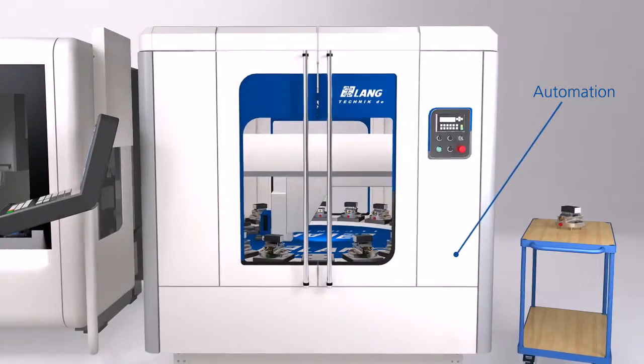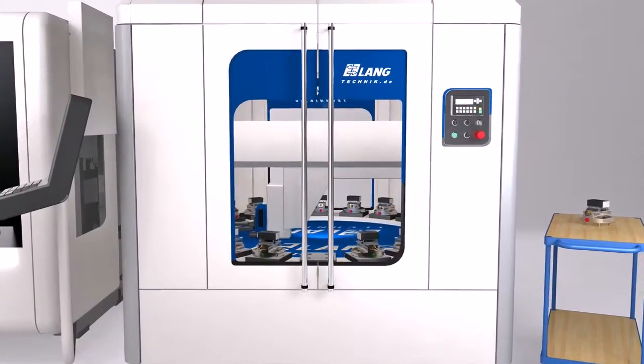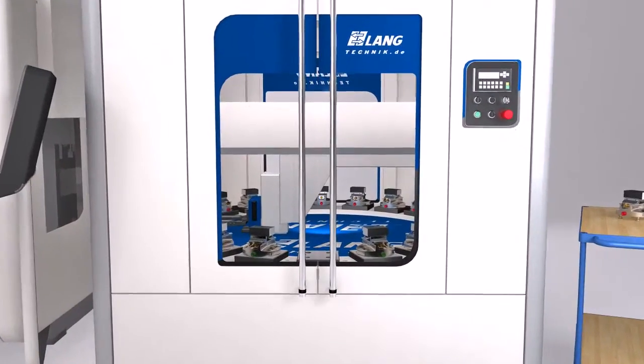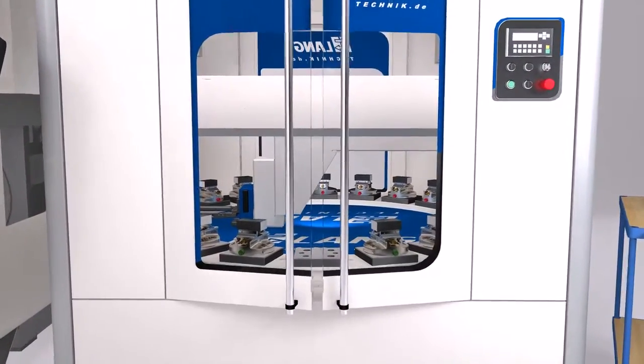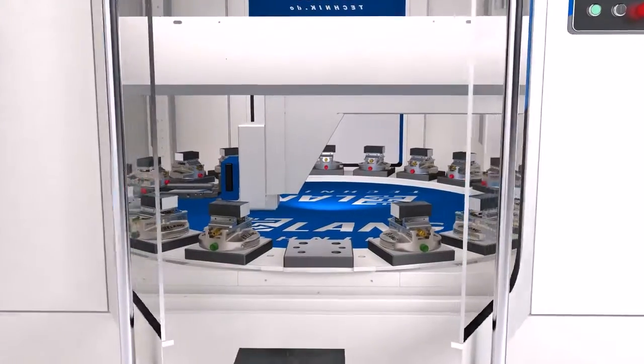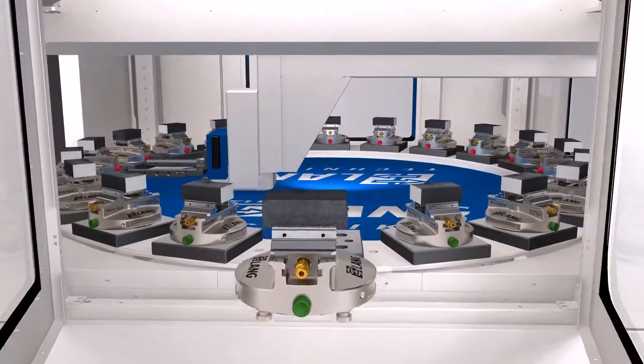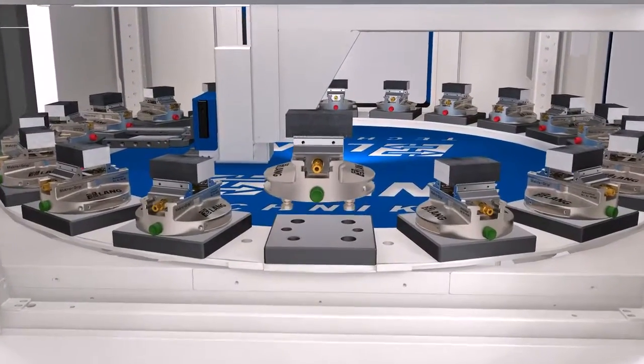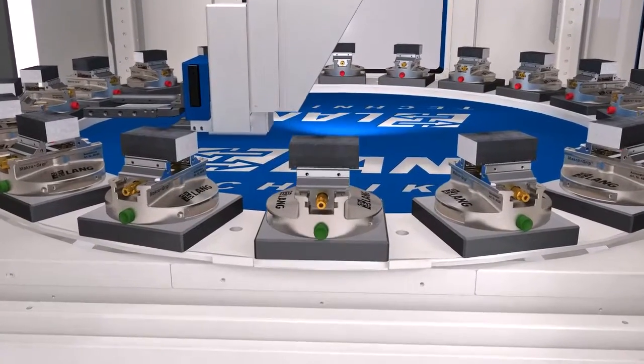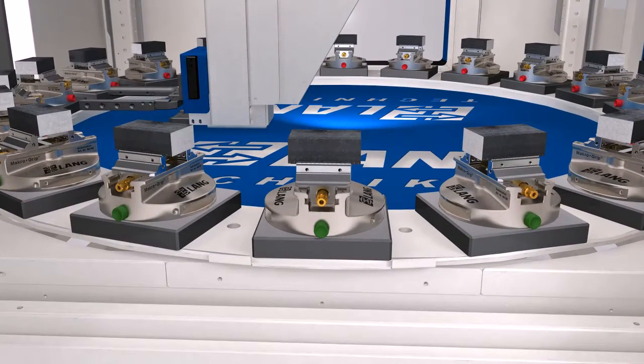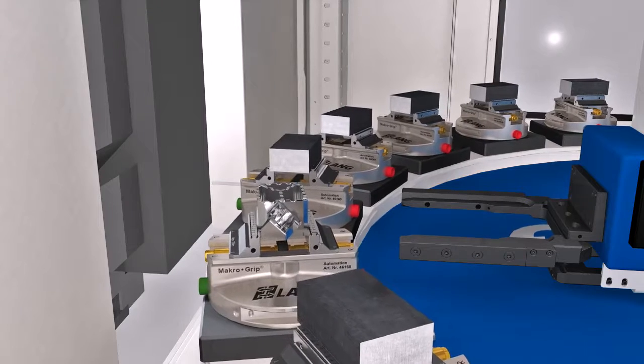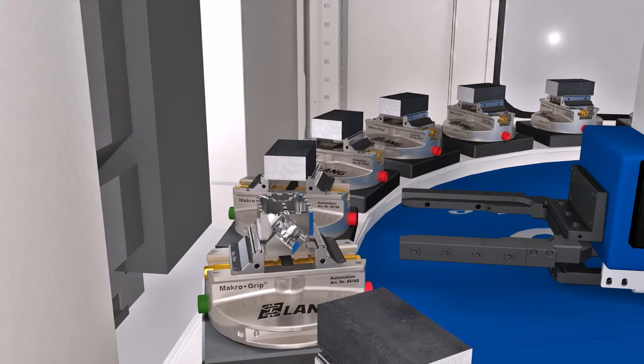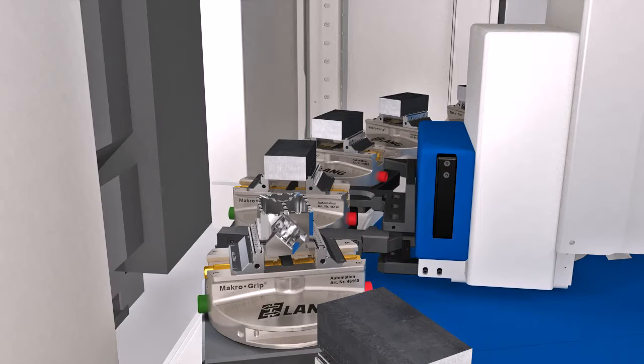For a long time now, the unmanned, automated delivery of workpieces has been a standard part of any future-oriented manufacturing facility. One of three different automation systems is our Eco Compact 20, which can hold up to 20 pellets, fixtures or vices. The simple operating features and competitive price help our customers with an uncomplicated start into automated manufacturing.